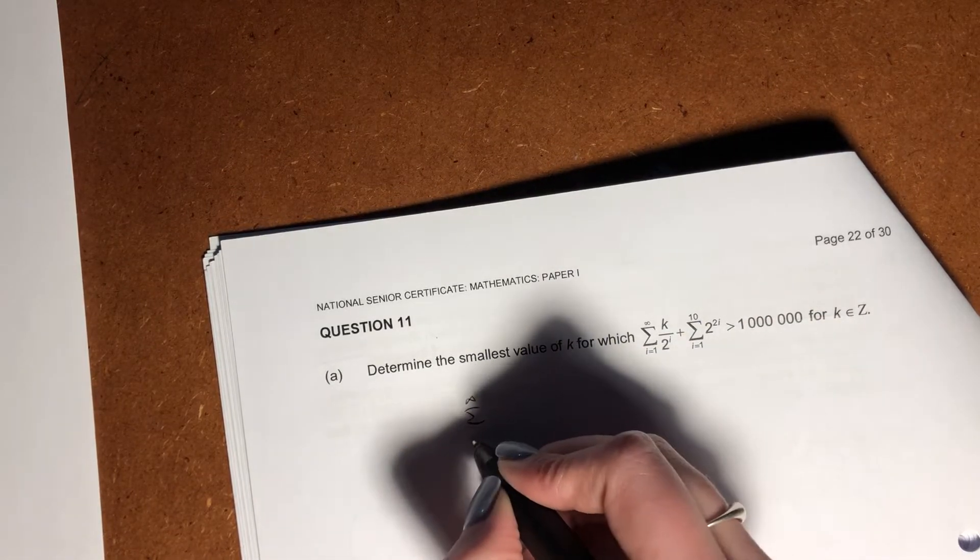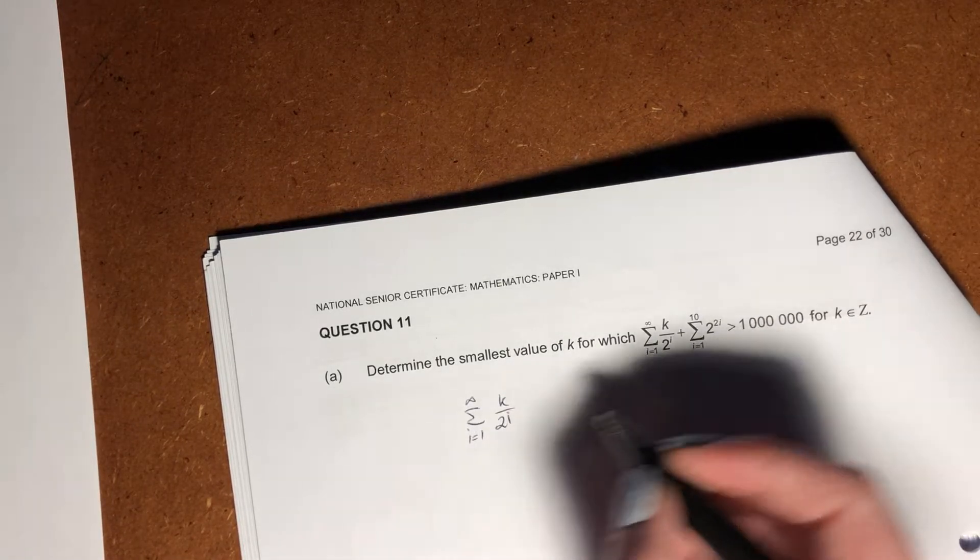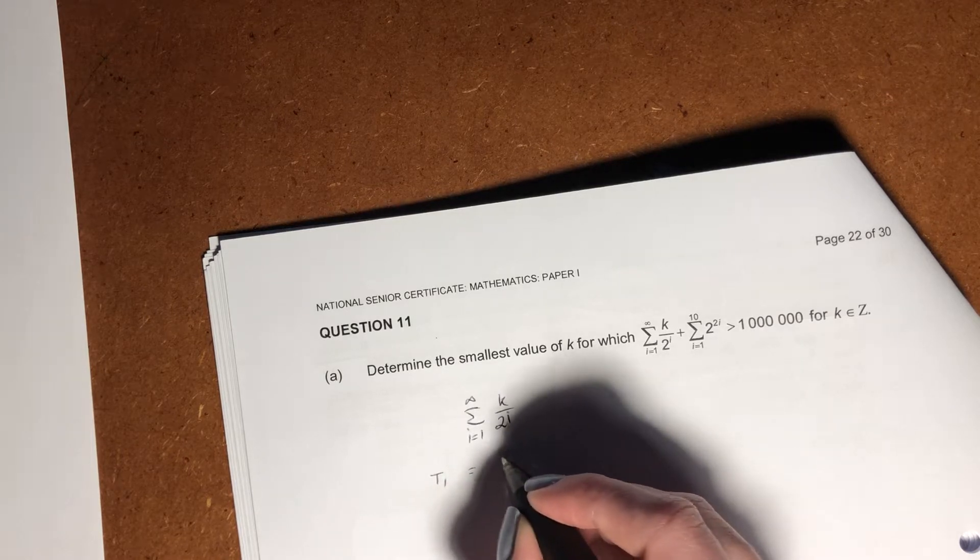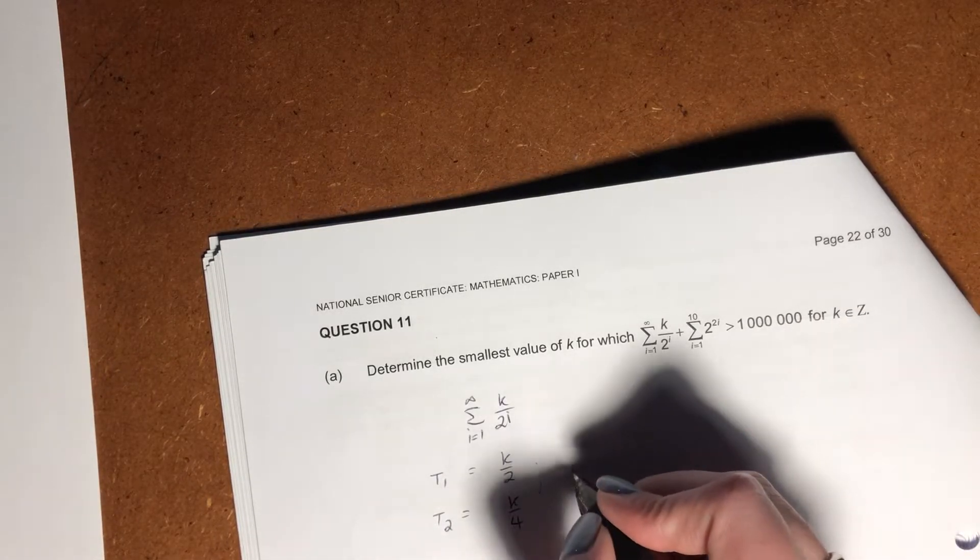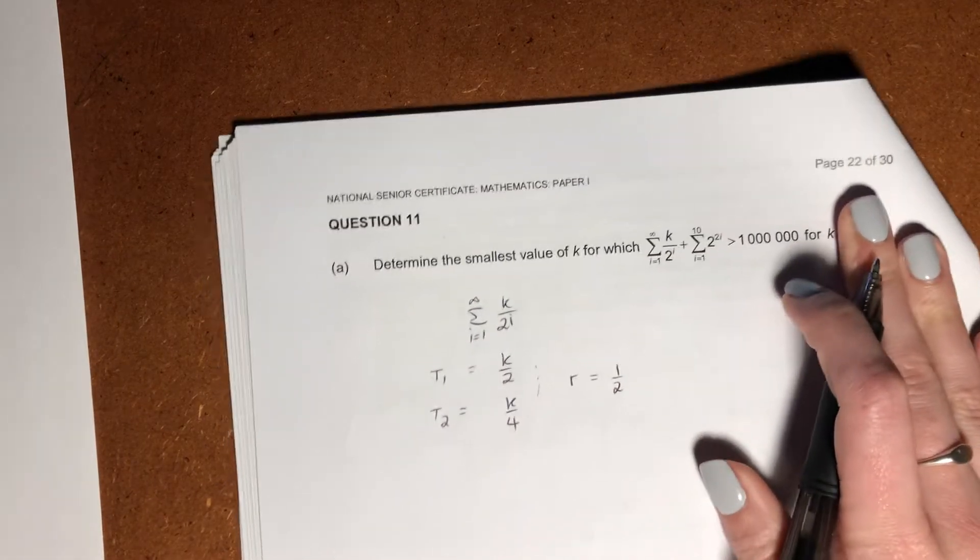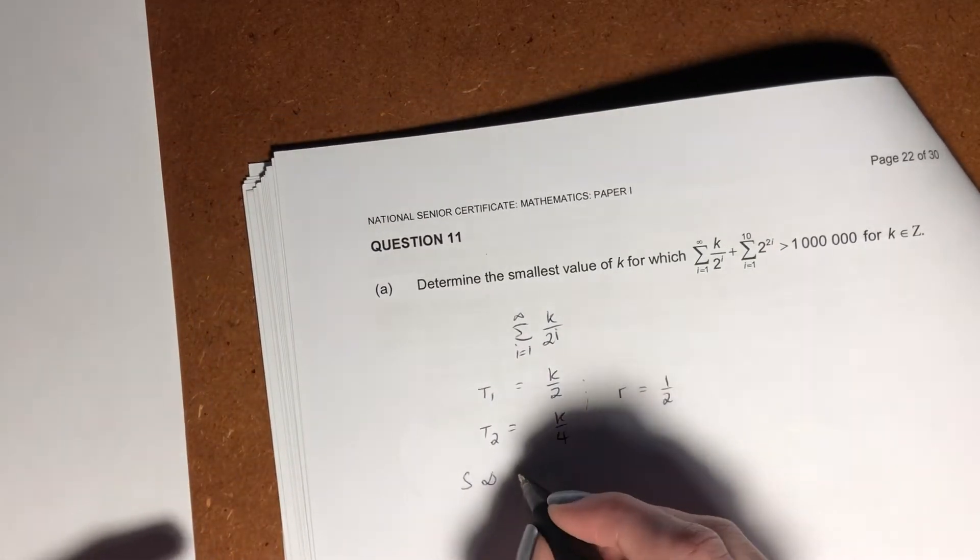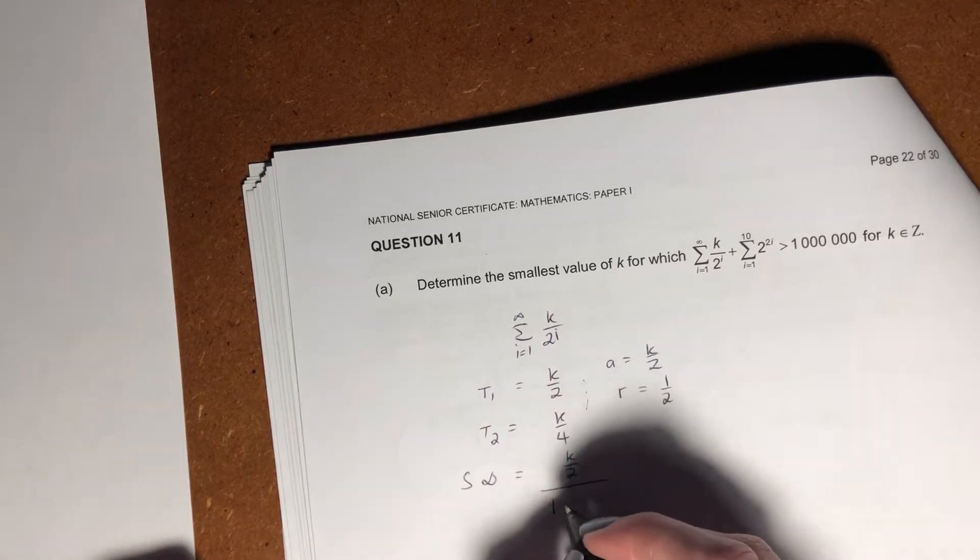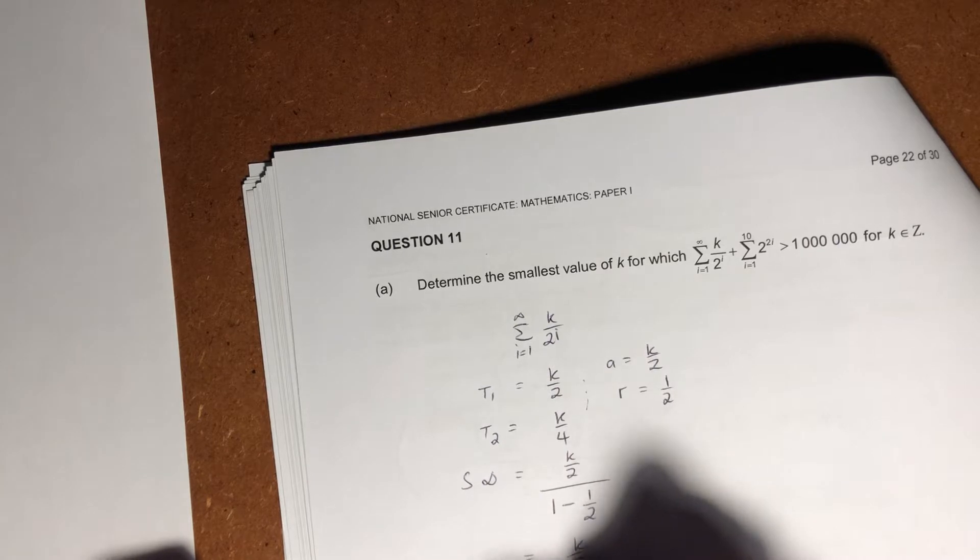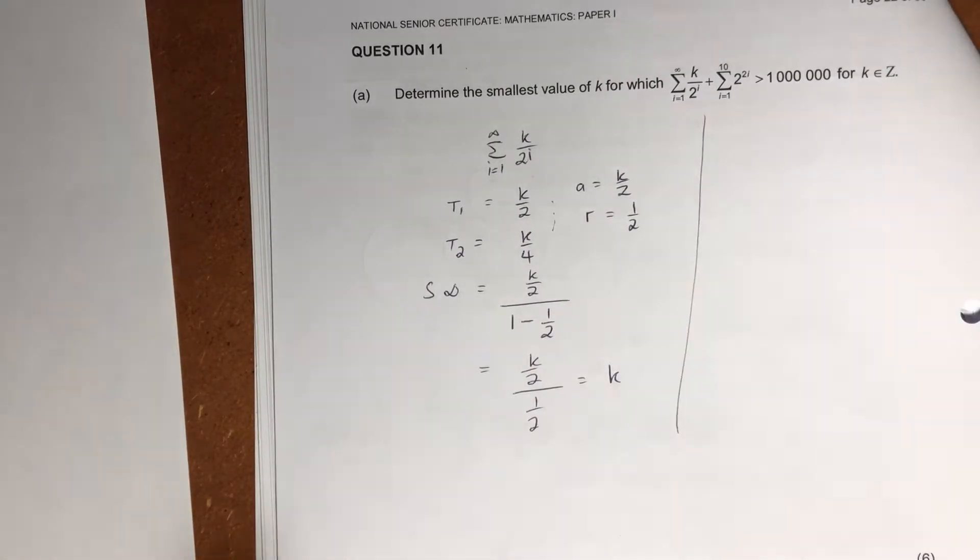So there's my sigma. It's to infinity, i equals 1, k over 2 to the power of i. Let's do when t equals 1, it would just equal k over 2. When t equals 2, it would be k over 4. So we're able to see that our r value is 1 over 2. Our a value is k over 2. So if we wanted to sum this to infinity, s to infinity of a would be k over 2 over 1 minus 1 over 2, which gives me k over 2 over half, which actually just gives me k. So this whole thing just sums to k.